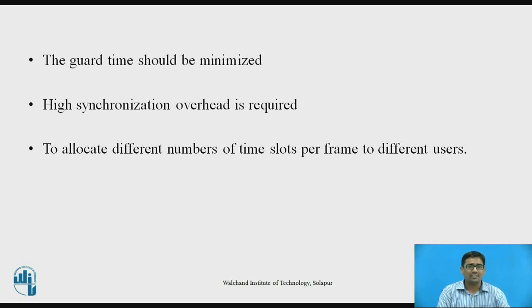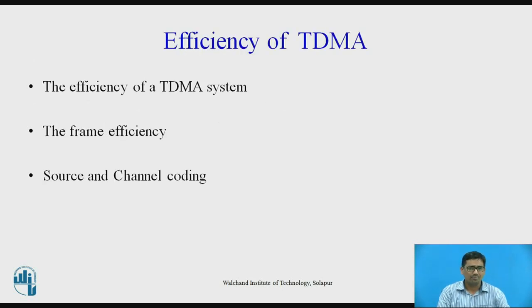TDMA has an advantage in that it is possible to allocate different numbers of time slots per frame to different users. Thus, bandwidth can be supplied on demand to different users by concentrating or reassigning time slots based on priority. The efficiency of a TDMA system is a measure of the percentage of transmitted data that contains information as opposed to providing overhead for the access scheme. The frame efficiency, denoted by NF, is the percentage of bits per frame which contain transmitted data. Note that the transmitted data may include source and channel coding bits, so the raw end user's efficiency of a system is generally less than NF.